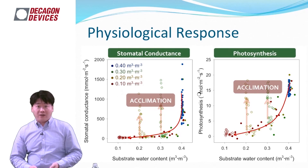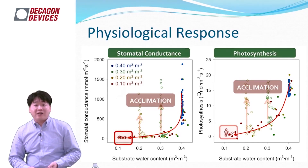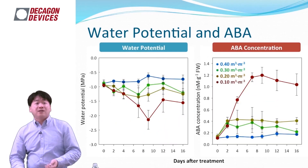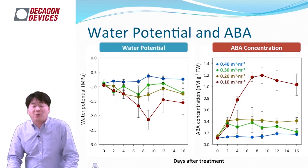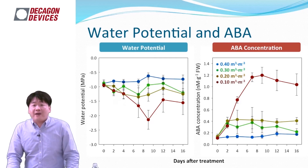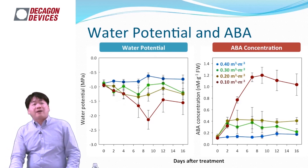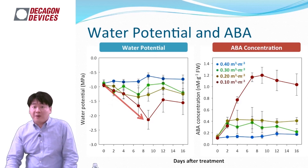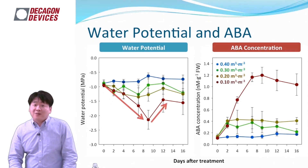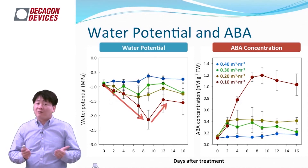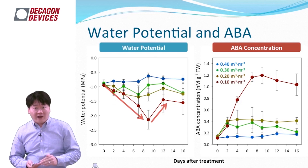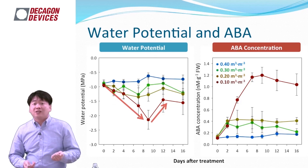However, the 10% substrate water content treatment showed no acclimation, indicating very severe drought at that level. The water potential graph shows that the 10% treatment decreased water potential, but it recovered. The 20% and 30% treatments maintained a slightly decreased water potential throughout the experiment.